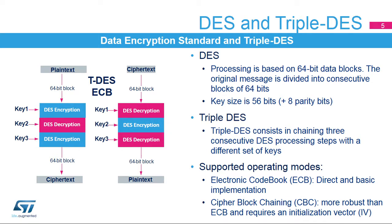Data Encryption Standard works on a data block of 64 bits. Input data is encrypted or decrypted using the same 56-bit key. Large messages are divided into several blocks of 64 bits that are chained together following one of the two modes of operation: Electronic Codebook, or ECB, or Cipher Block Chaining, or CBC.